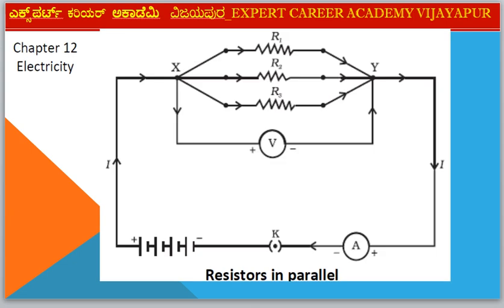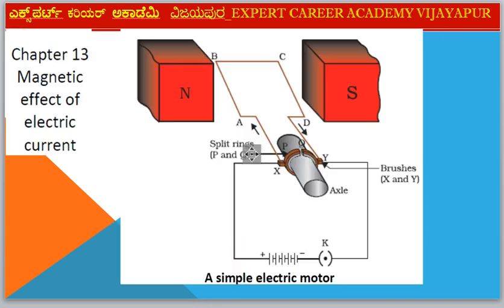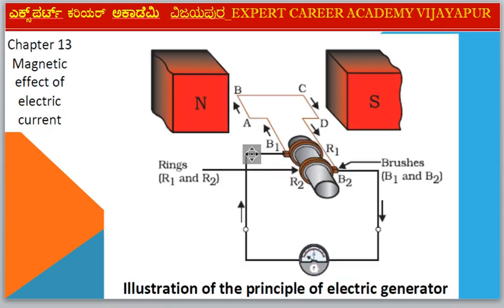Chapter 12: Electricity. Diagram: Resistors in Parallel (R1, R2, R3). Next — Chapter 13: Magnetic Effect of Electric Current. Diagram: Simple Electric Motor.